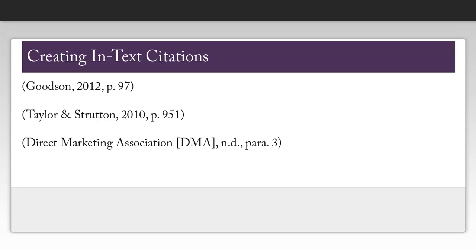In addition to citing your sources at the end of your paper, you'll also need to cite them throughout your paper. In order to do this, you need the author names, the date, and the page number for the source you're citing. Notice that before the page number, I just have the letter 'p.' For the Direct Marketing Association, I added 'DMA' in brackets so that each subsequent time I cite this source, I can just use DMA in my in-text citation. For documents without pages, you can indicate paragraph number by using 'para.' followed by a period.